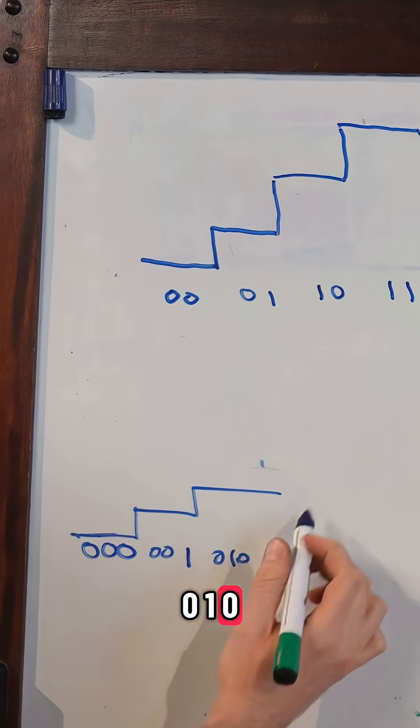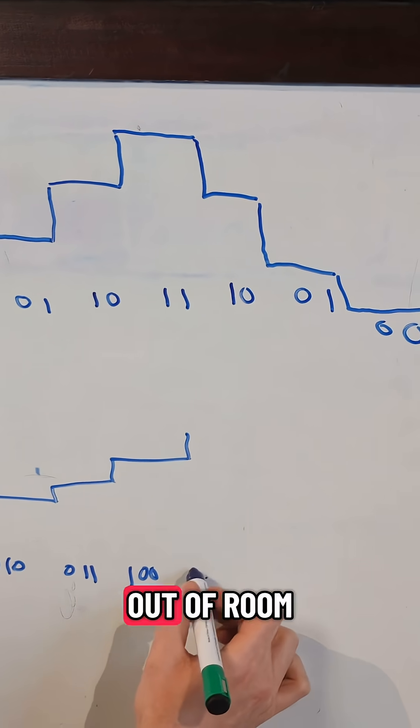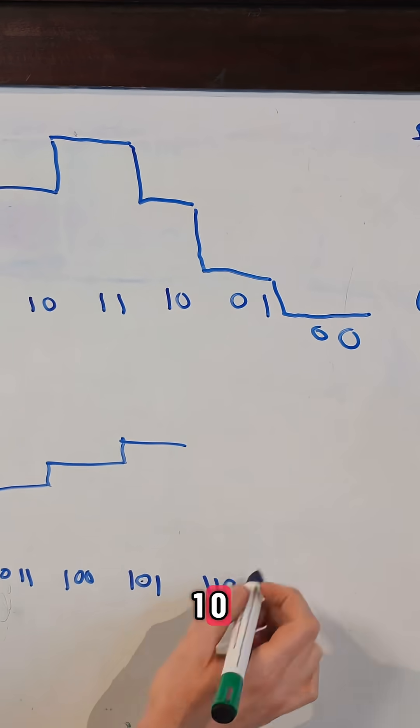We're going to have zero, one, zero. Zero, one, one. One, zero, zero. I'm going to run out of room. One, zero, one. One, one, zero. One, one, one.